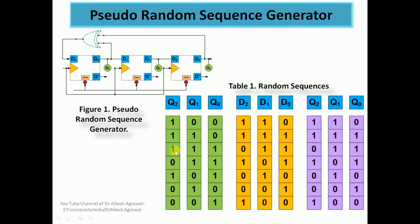Now the XOR of Q2=1 and Q0=1 gives 0, which goes to D2. Q2 goes to D1 and Q1 goes to D0, so the input condition is 011. After the clock, the output is 011. From 111 we have 011. Then the XOR of Q2=0 and Q0=1 gives 1, which goes to D2, and the input condition becomes 101. After the clock the next state is 101.